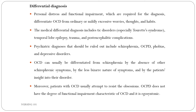OCPD is obsessive-compulsive personality disorder, and it is very different from OCD. OCD is a psychiatric disorder, while OCPD is a personality disorder. In OCPD there is an excessive need for perfection and trying to relentlessly control one's environment and interpersonal relationships. People with OCPD are preoccupied with details, rules, lists, and order, which can result in missing the major objective of an activity. There is excessive devotion to work; they are very rigid and inflexible. People with this personality disorder adhere to orderliness and control over their environment at the expense of flexibility and openness to new experiences.